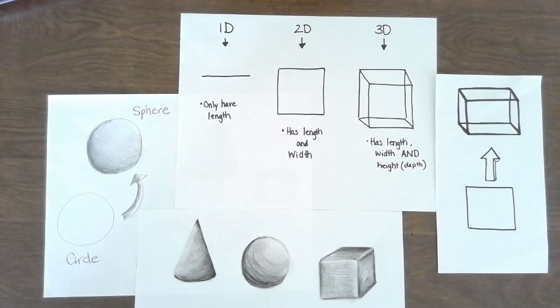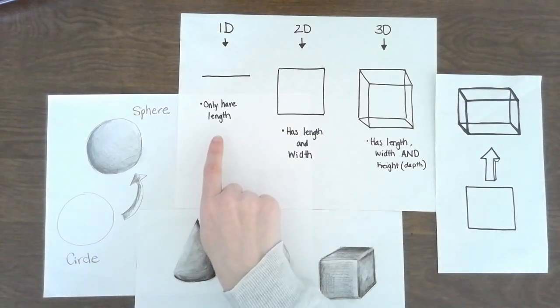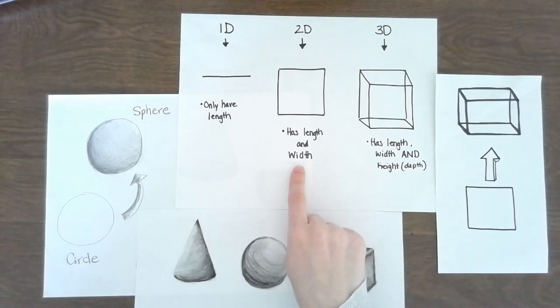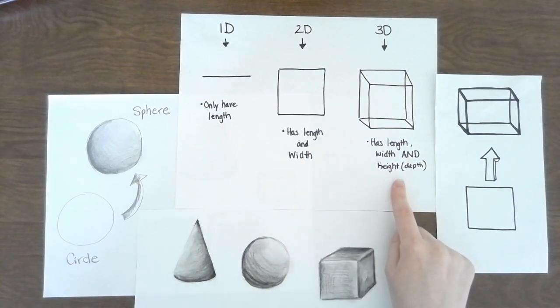Now, while this wasn't completely a drawing video, I do encourage you to try to use value and shading into your artwork to make it look more realistic. Taking something simple that has one dimension, like a line, which only has length, turning it into a shape, which has length and width, so it's two-dimensional, and then into something that's 3D that has length, width and height or depth.